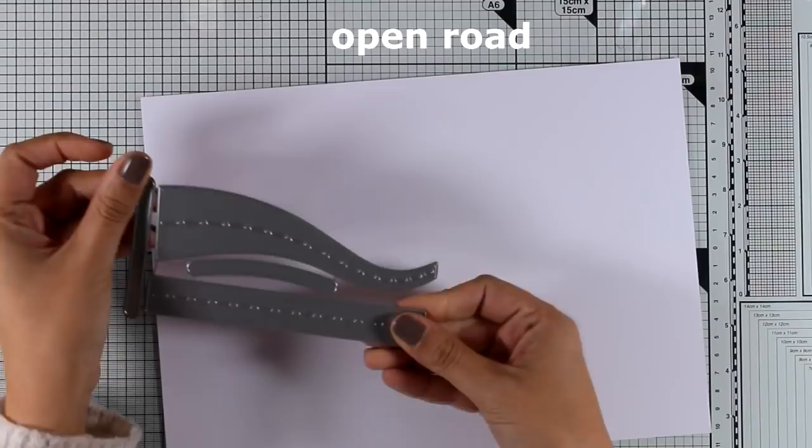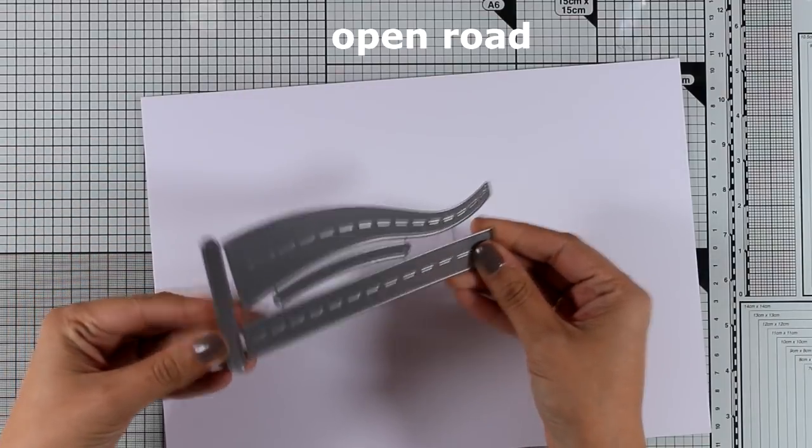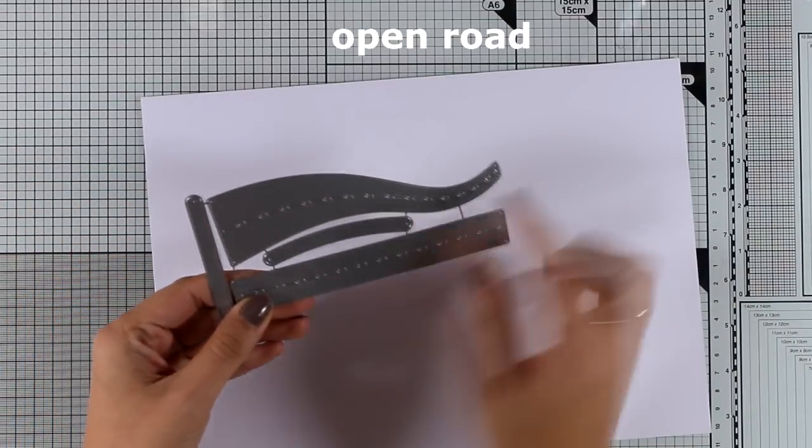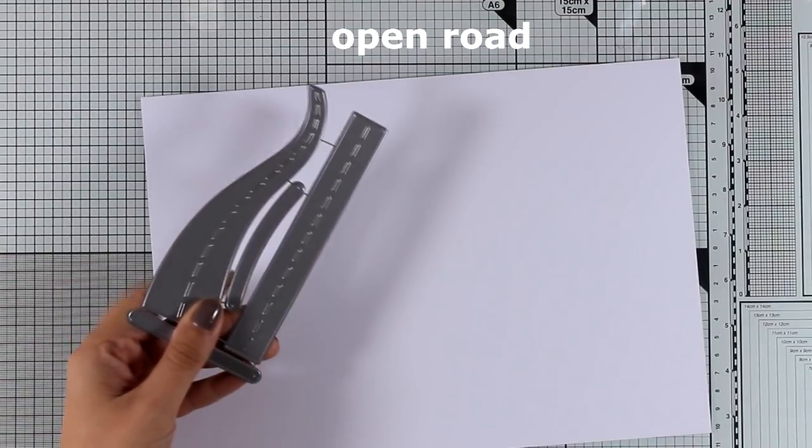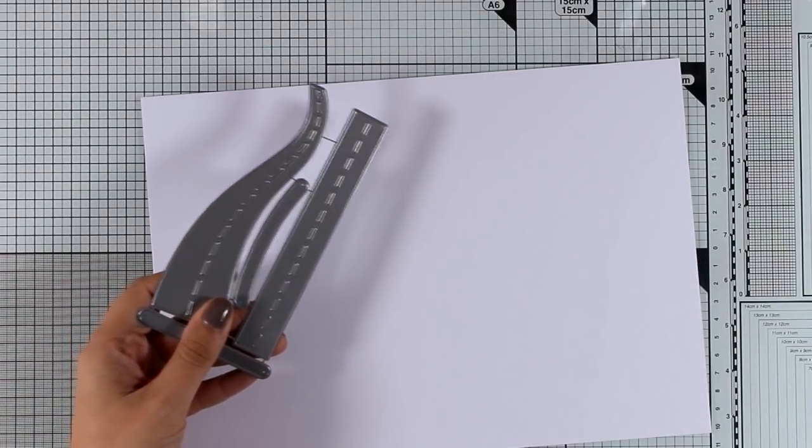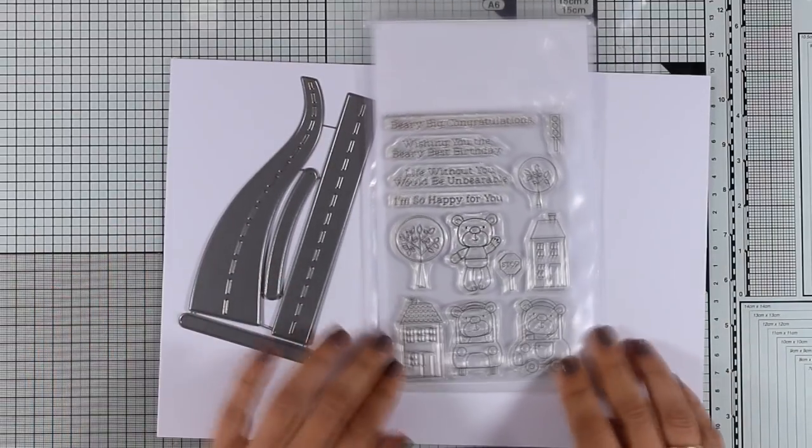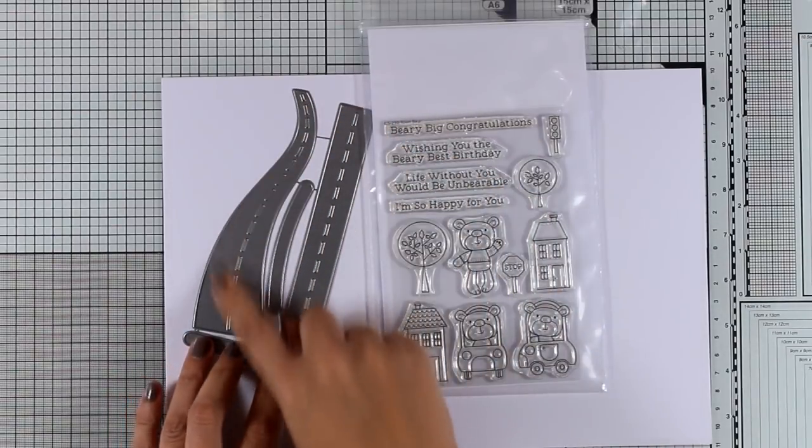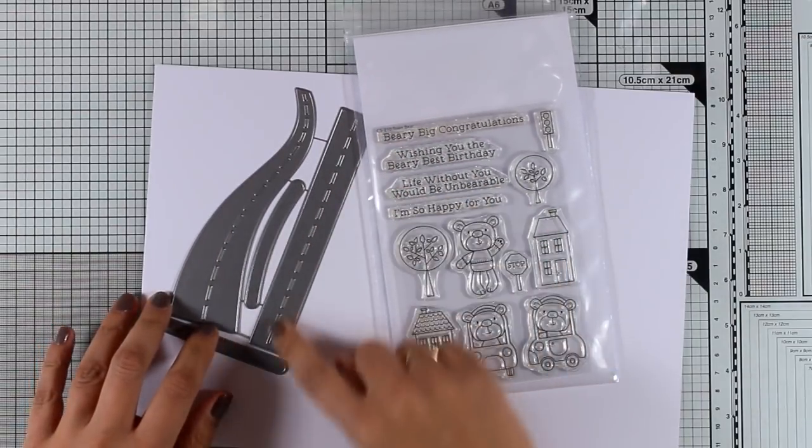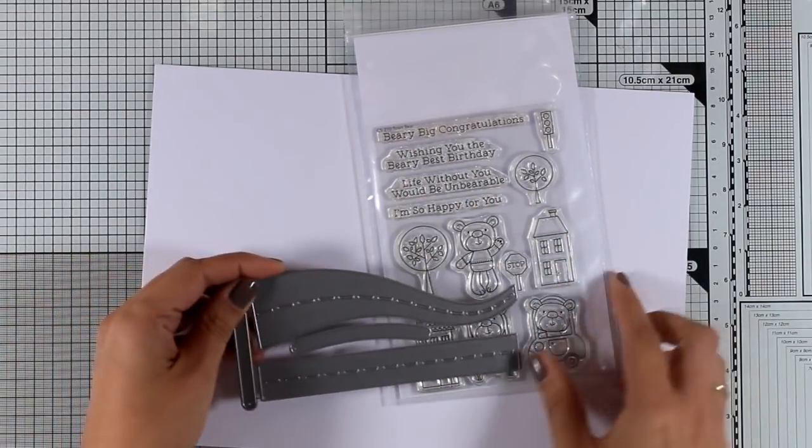Now let's move on to the dies released for December. This is called Open Road Dynamics and it comes with those two roads along with dies that you can use to create little sliders for interactive cards and I like that you can match this with the Town Bear stamp set where you get those bears driving the car and you can put them on top of those roads.